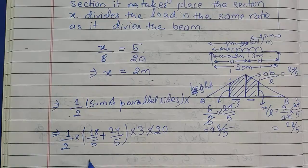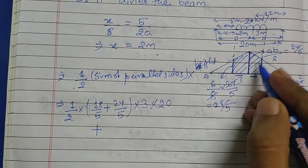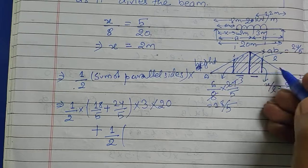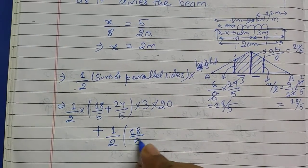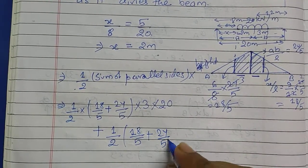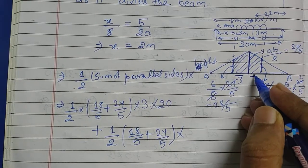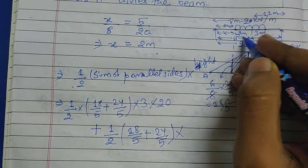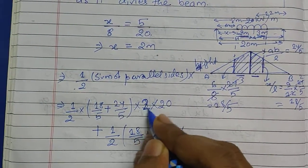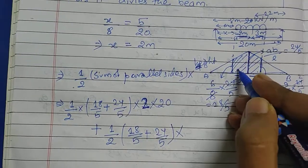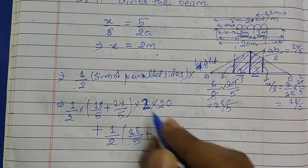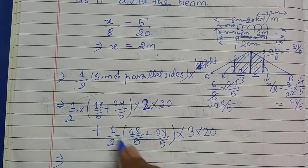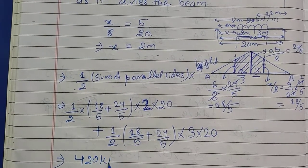Plus, for the second trapezoid, the parallel sides are again 18/5 and 24/5, with height 2 meters. So the full expression is: half times (18/5 + 24/5) times 3, plus half times (18/5 + 24/5) times 2, all multiplied by the load of 20 kN per meter. Calculating this gives 420 kilo Newton meters, and this is our maximum bending moment.